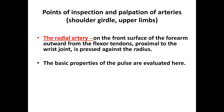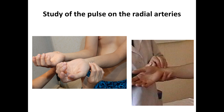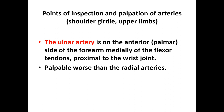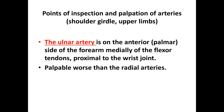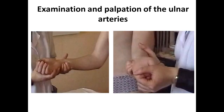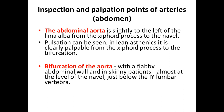The radial artery is on the front surface of the forearm, outward from the flexor tendon, proximal to the wrist joint, and is pressed against the radius. Here I represent how to correctly palpate the radial arteries. The ulnar artery is on the anterior palmar side of the forearm, medially of the flexor tendon, proximal to the wrist joint, and is palpable but worse than the radial artery. Here also are techniques for examination and palpation of ulnar arteries.